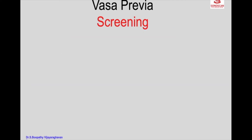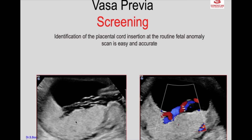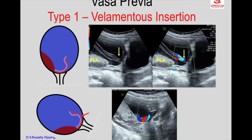Ultrasound has a screening role for vasa previa in the second trimester anomaly scan, because identification of the placental cord insertion is one of the requisites of that scan. It is easy and accurate. Once the cord insertion is identified, vasa previa can be ruled out. Here you see the velamentous insertion of the cord with the posterior placenta, the internal os, and the vessels crossing the internal os to reach the posterior placenta.